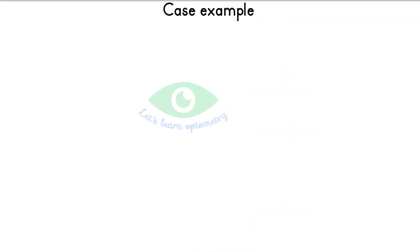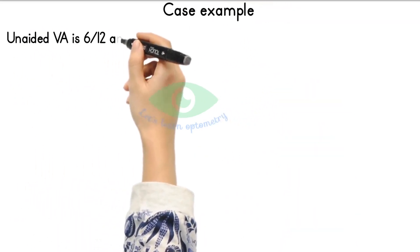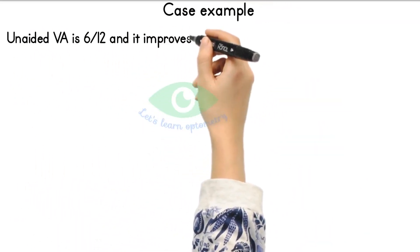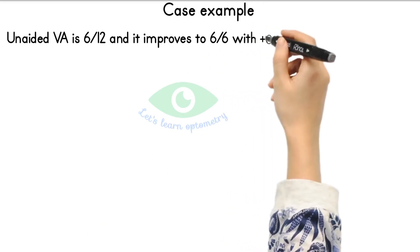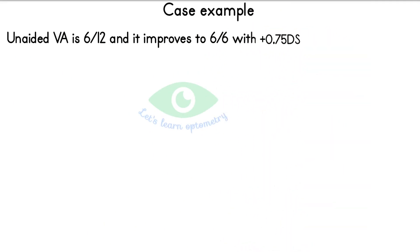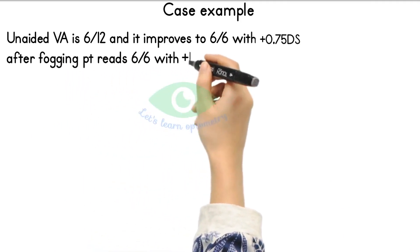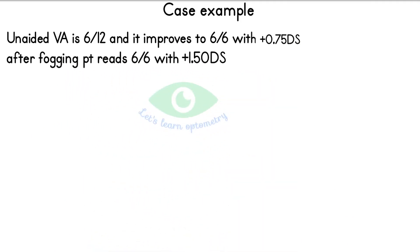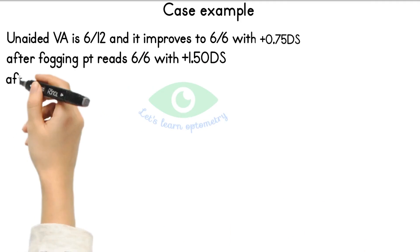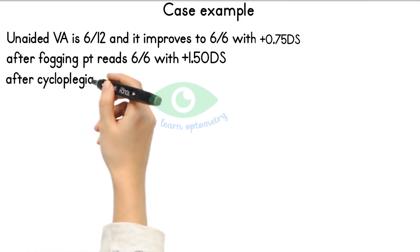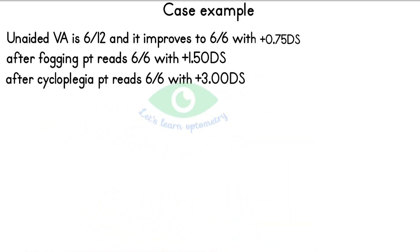Let's see a case example. The patient has an unaided visual acuity of 6/12, which improves to 6/6 with +0.75 D spherical. After fogging, the patient reads 6/6 with +1.5 D spherical. After cycloplegic refraction, the patient reads 6/6 with +3.0 D spherical. Let's find each component of hypermetropia in this scenario.